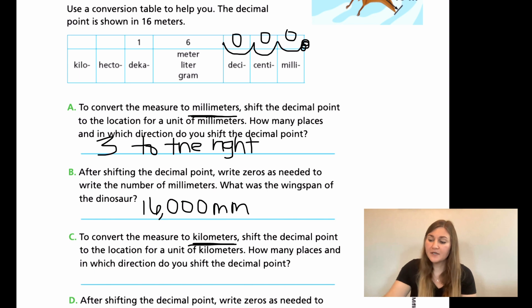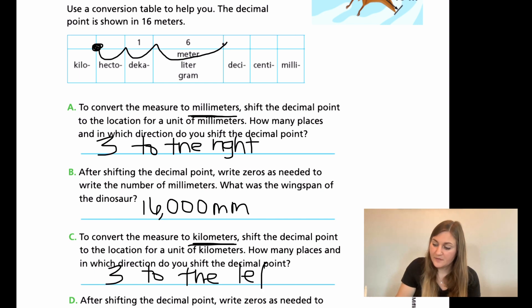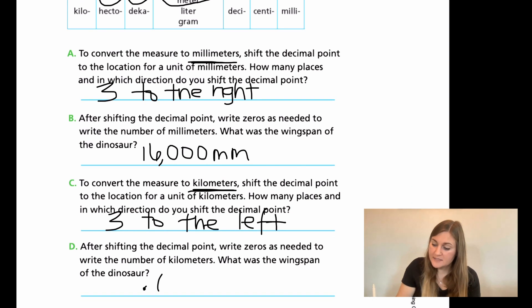For C, now we're going the opposite way. I'm going to go ahead and erase so that we can see our original decimal point so that we can see exactly what's happening when we move to the kilometers. So to convert the measure to kilometers, shift the decimal point to the location for the unit of kilometers. How many places and in which direction? So we're starting in our original decimal and we're going to go to deco, hecto, then kilo. All right. So now our decimal point is right there. So this time we went three to the left. So now after shifting the decimal point, right zeros is needed. I moved past the six past the one. So I only have one empty spot, which means I'm just going to have one zero is needed. So what's the wingspan of this dinosaur? It is 0.016. And then the unit that we just found was kilometers. So that's going to be km.